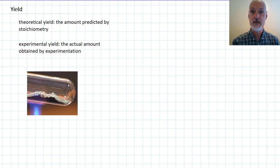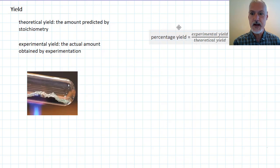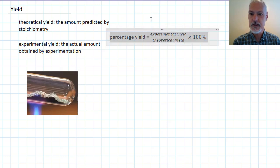This program is going to take a look at the concept of yield. Yield can be expressed many ways. First, we have our theoretical yield, the amount that's predicted using stoichiometric calculations based on the amount of reactants present. We also have our experimental yield, that which is actually obtained through the course of an experiment. And then we have percentage yield, which is a way of comparing the two yields with each other.